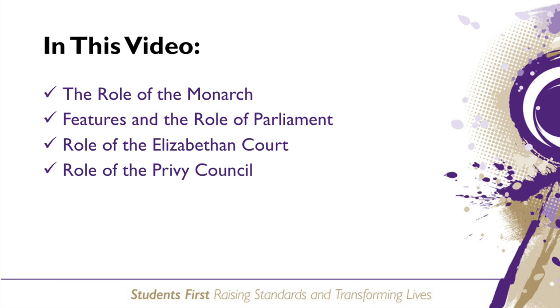In summary, when thinking about the Elizabethan Government it's important that you think about the four elements: the role of the monarch, the role of Parliament, the court, and the Privy Council. Remember, all power flows from the monarch.